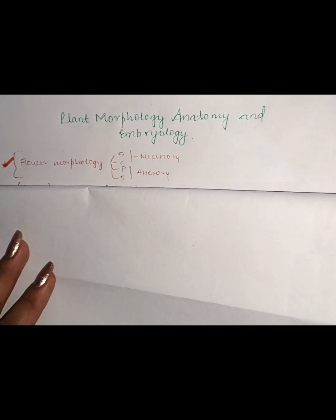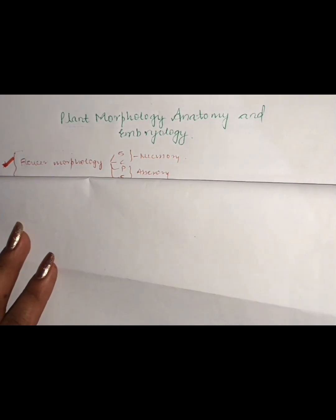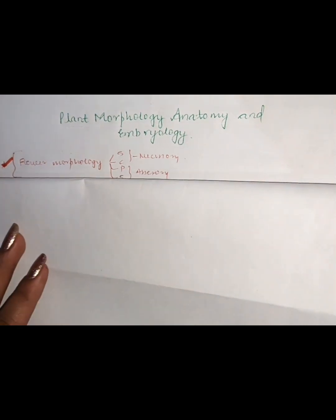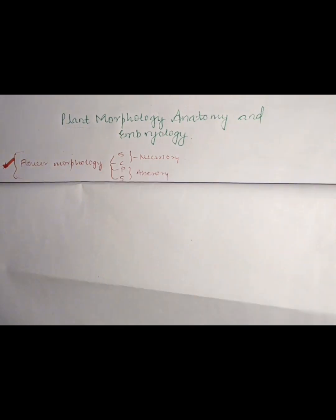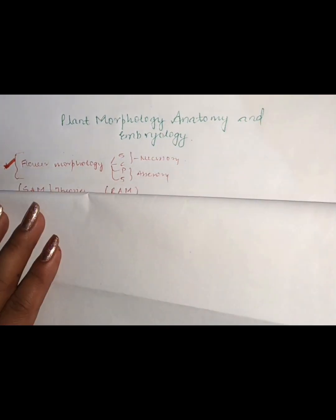When we talk about morphology, here we study about the external structures. In anatomy, we study about the internal structure. When we talk about embryology, that is the embryological development — how fertilization and all processes are taking place. It all comes under embryology. So the first topic which you have to prepare is flower morphology.